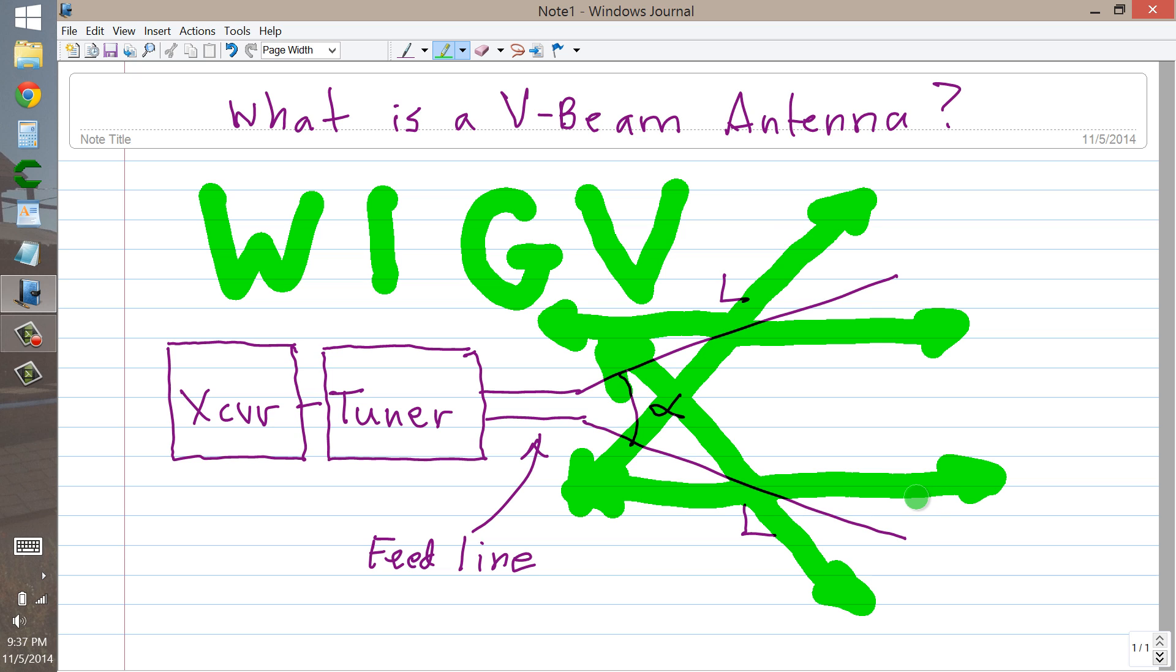So the concept of the V-beam is to adjust the lengths and the angle in such a way that this state of affairs prevails. You will need a balanced feed line, preferably ladder line of 450 or 600 ohms, an antenna tuner, and your radio.